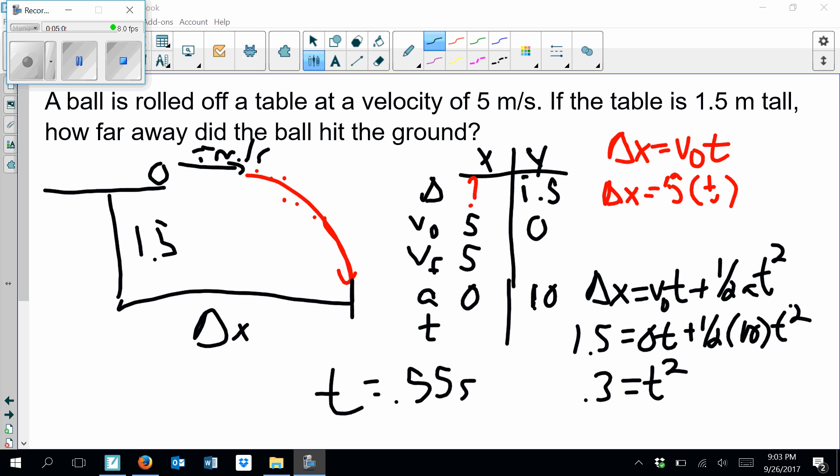So now that I have the time, I can go back into this first equation and plug it in. So 5 times 0.55 gets me a value of 2.74 meters. And that's the problem.